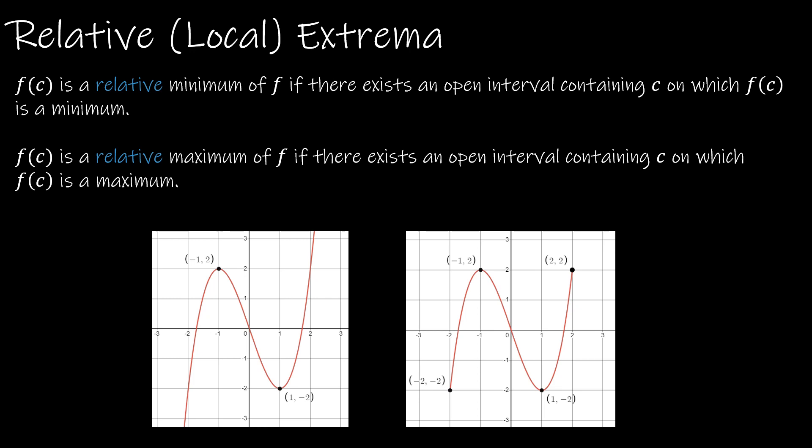We just talked about absolute extrema. Now we want to talk about relative extrema, also called local extrema. So f(c) is a relative minimum of f if there exists an open interval containing c on which f(c) is a minimum. And then same thing for a maximum. So here's what I mean by that.